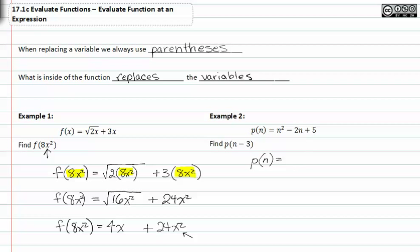I'm going to rewrite that as p(n-3) equal to, and wherever there was an n I'm going to put parentheses.